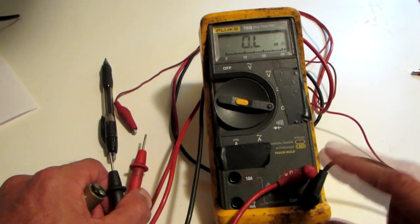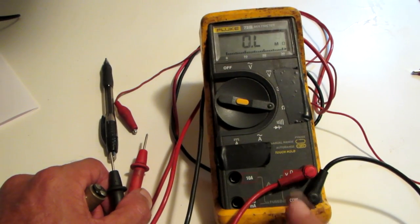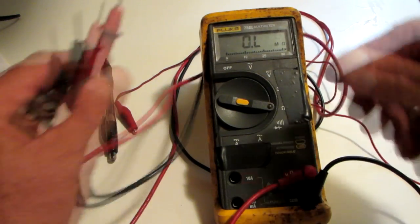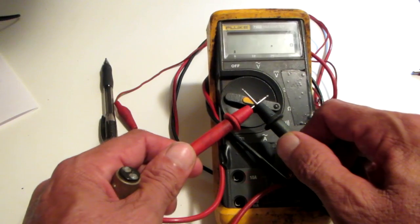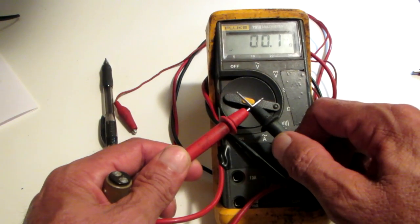And we're going to take our multimeter, put it in the ohms, our red lead in the volt ohms jack and the black lead in the common. Test our meter, make sure it works.